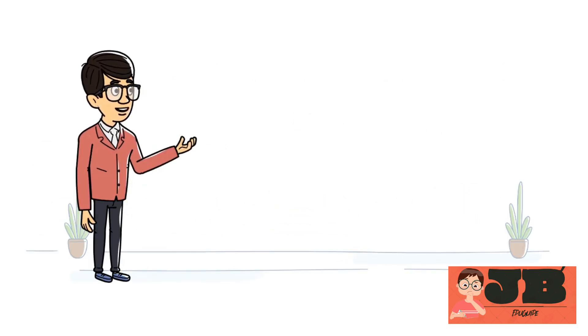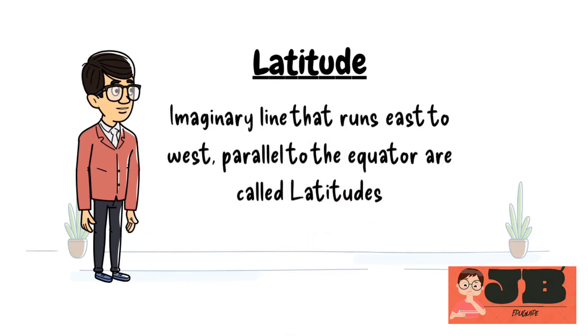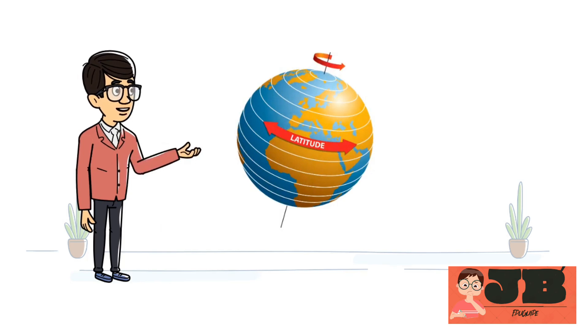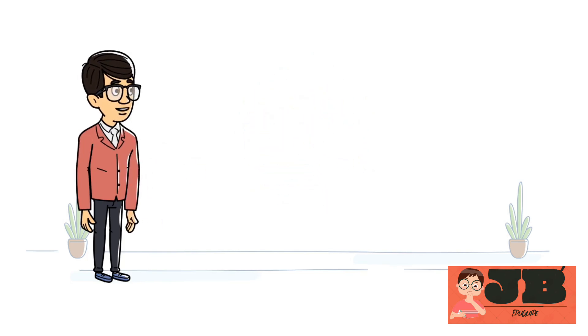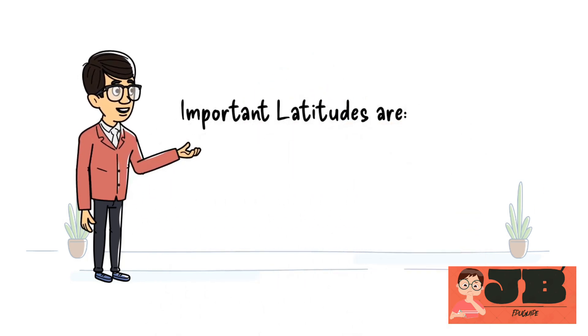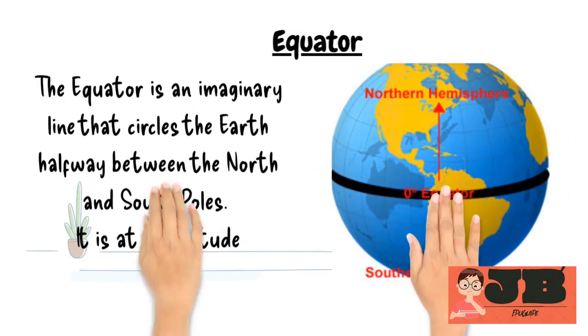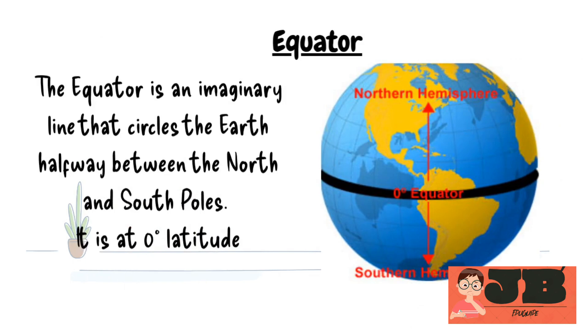Let's discuss about latitude. Students, do you know what is latitude? Let's know. Imaginary line that runs east to west, parallel to the equator are called latitudes. You can see the globe. Those white circles are latitudes. Now you should know about different important latitudes of the globe. First is equator. The equator is an imaginary line that circles the Earth halfway between the north and south poles. It is at 0 degrees latitude.